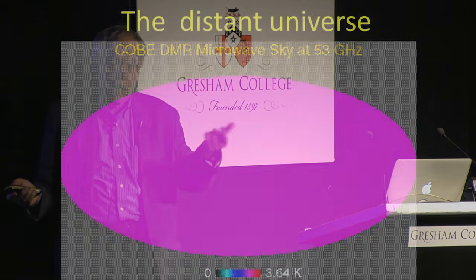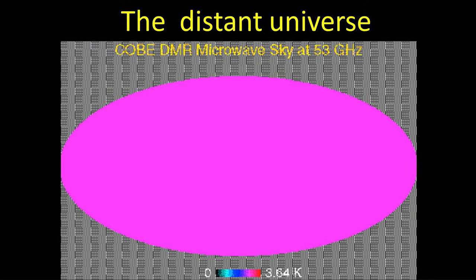So in some sense, when we look at this — and you can actually, if you turn your TV on to in-between channels, you see noise on the TV — 1% of that noise is this microwave radiation from the Big Bang. So basically, you're looking at the first weeks of the universe.